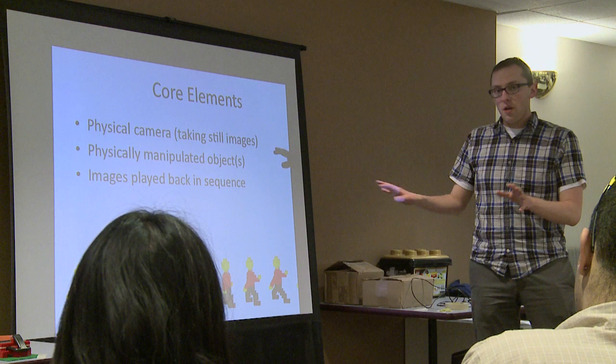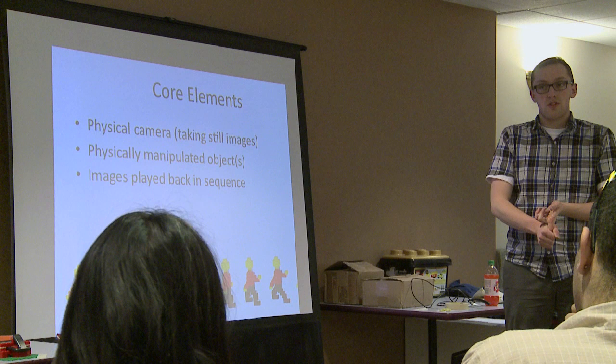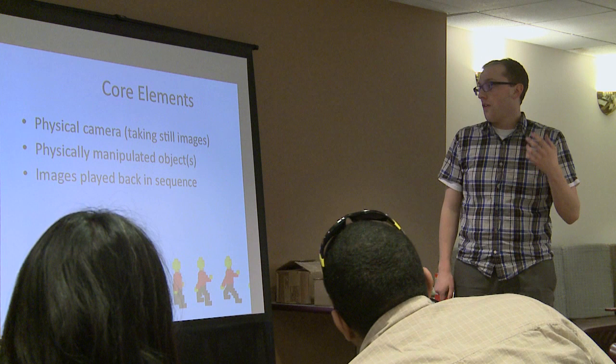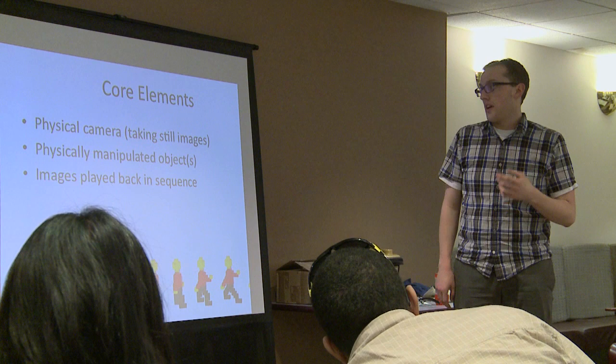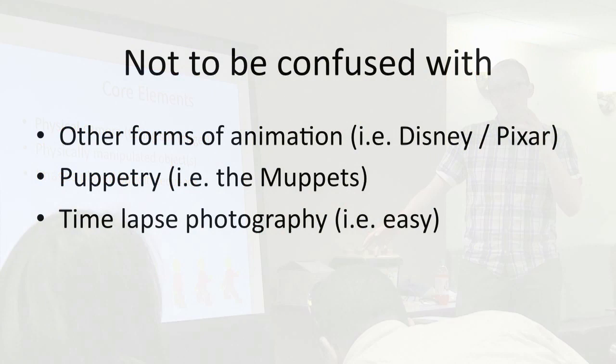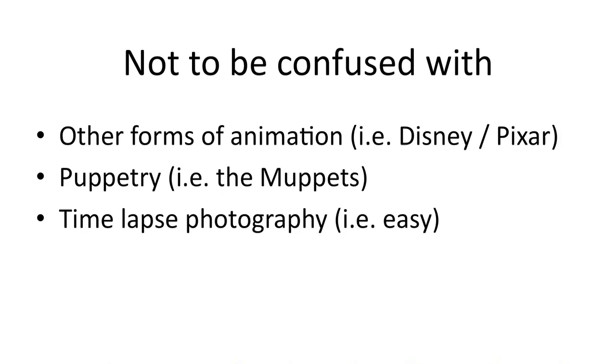The core elements of a stop motion animation are a physical camera taking still images, as opposed to a virtual camera in a computer setting like you would with 3D animation. A physically manipulated object, as opposed to an object that's just doing its own thing — that's how you differentiate it from time-lapse photography. It's not to be confused with other forms of animation like Disney or Pixar, which are either drawn or computer animated.